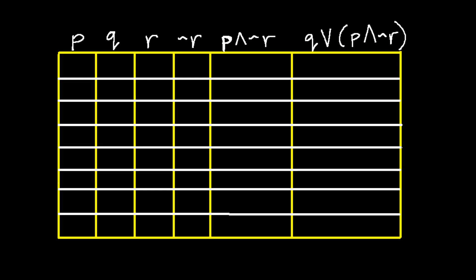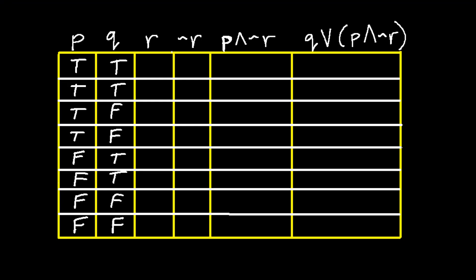There are eight total possibilities we need to consider in a three variable truth table. We typically write true for p on the first four lines and false for p on the last four lines. For q we often alternate two true values followed by two false values for the entire table. For r we alternate true and false for the entire table. In this particular problem they are wanting us to create a truth table for q or (p and not r).